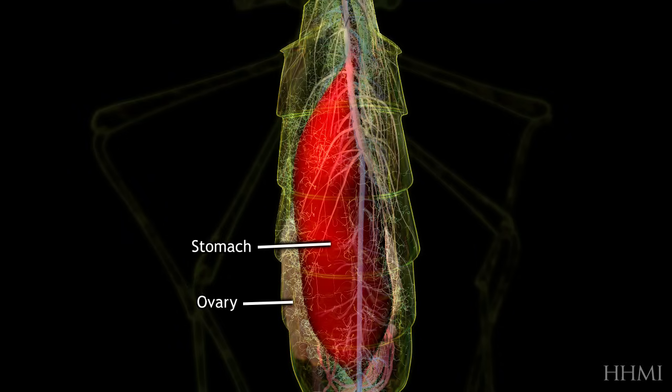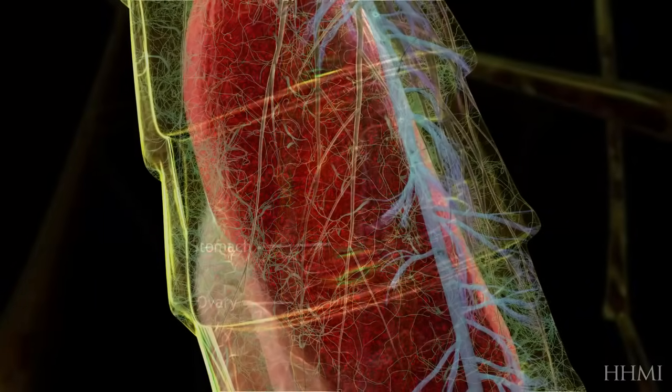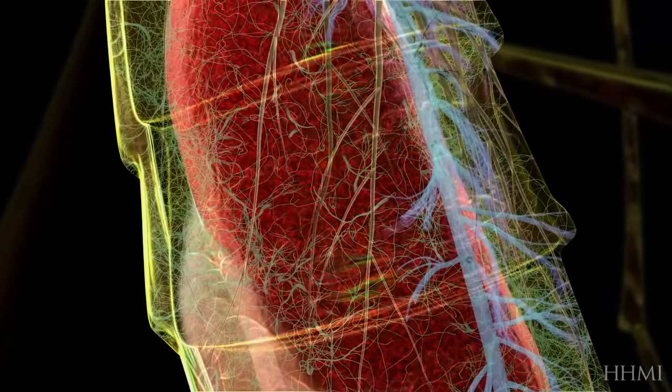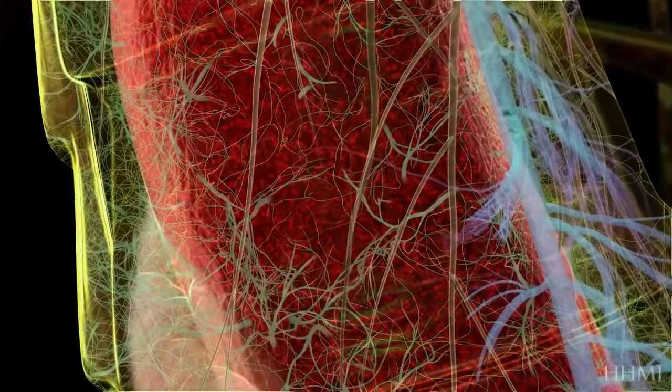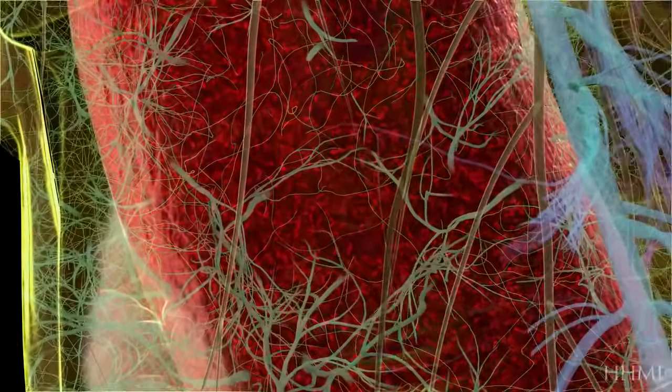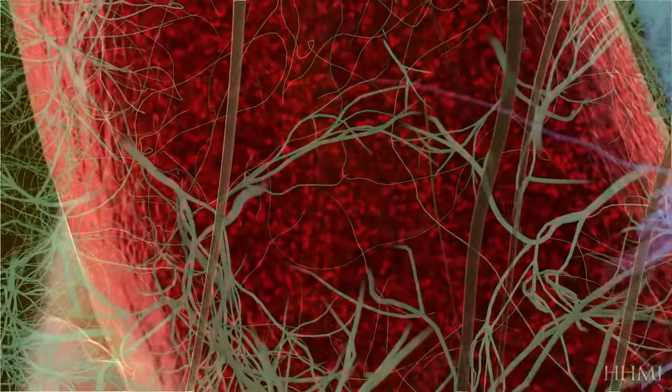If she drinks blood from someone infected with malaria, she too becomes infected with the disease. The tiny drop of blood filling the insect's stomach is teeming with malaria parasites.